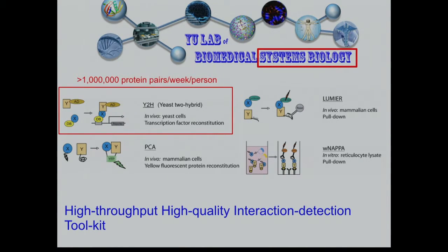We believe our version of Y2H is actually very high quality. A key problem is that many early networks — the Drosophila network, the early yeast Y2H network — were done using cDNA libraries. We use ORF clones instead: for each gene we generate a specific clone, sequence-verify it so we know the sequence is right, and then test it.